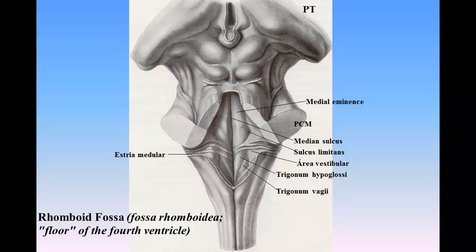On either side of the median sulcus is an elevation, the medial eminence, bounded laterally by a sulcus, the sulcus limitans. In the superior part of the fossa, the medial eminence has a width equal to that of the corresponding half of the fossa, but opposite the superior fovea it forms an elongated swelling, the colliculus facialis, which overlies the nucleus of the abducent nerve and is, in part at least, produced by the ascending portion of the root of the facial nerve. In the inferior part of the fossa, the medial eminence assumes the form of a triangular area, the trigonum hypoglossi. When examined underwater with a lens, this trigone is seen to consist of a medial and a lateral area separated by a series of oblique furrows. The medial area corresponds with the upper part of the nucleus of the hypoglossal nerve; the lateral, with a small nucleus, the nucleus intercalatus.